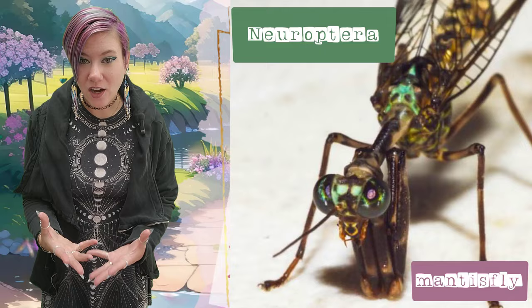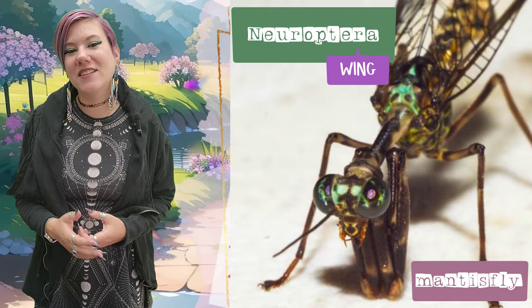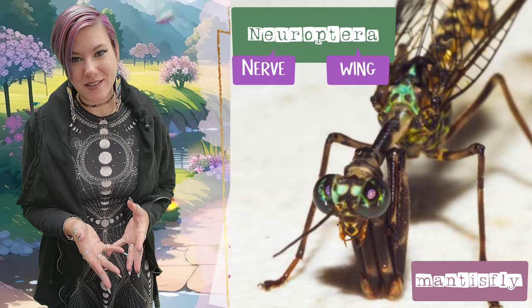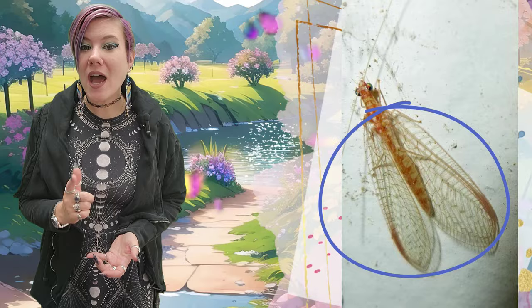Today we are talking about the insect order Neuroptera. If you've been following this series, you know that 'ptera' means wing and 'neuro' means nerves — this is why you have neurons in your nervous system — and this has to do with the incredible amount of wing venation we see in the insects that belong to this order.